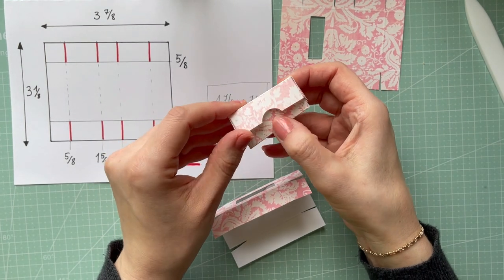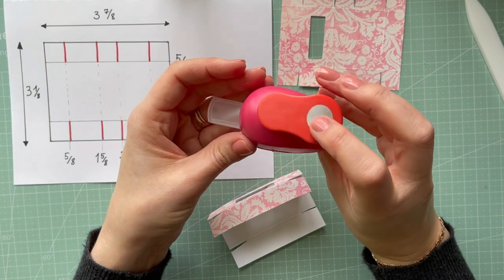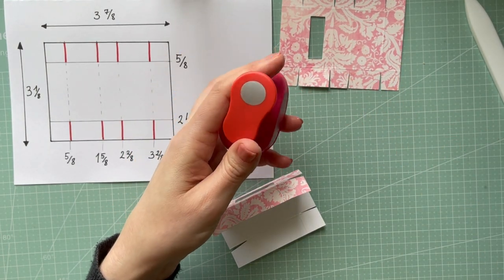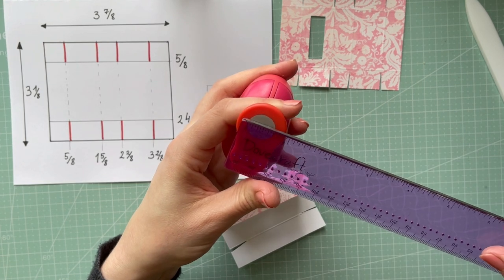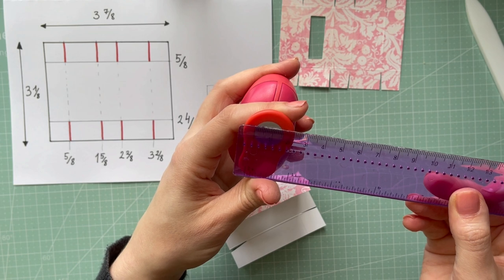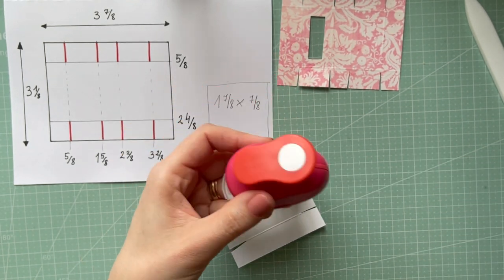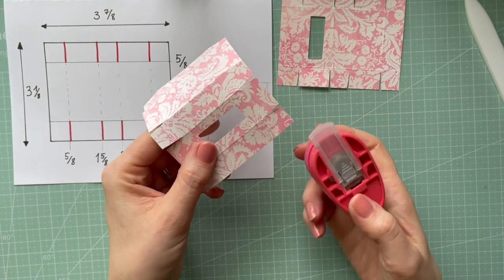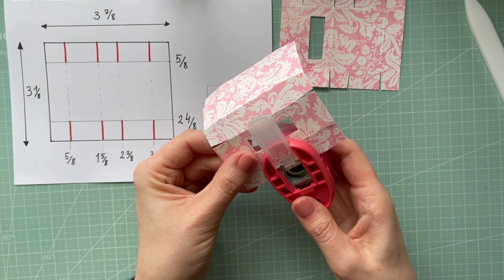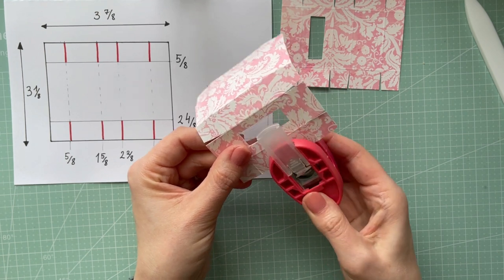And now it's time to create that notch. I've got this little punch. I got it off Amazon, actually. This one is 16 centimeters. I got it off Amazon. If I will be able to find it, I will link it below the video as well, because I got it a few months ago.